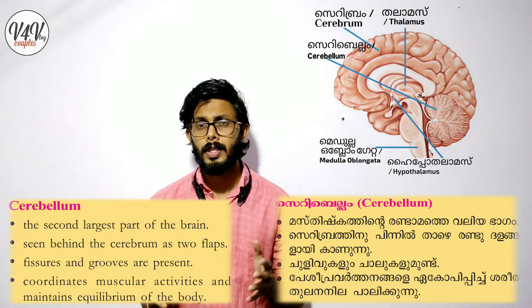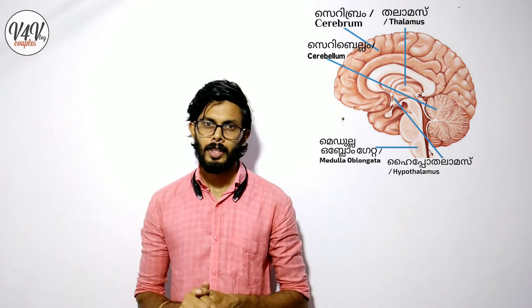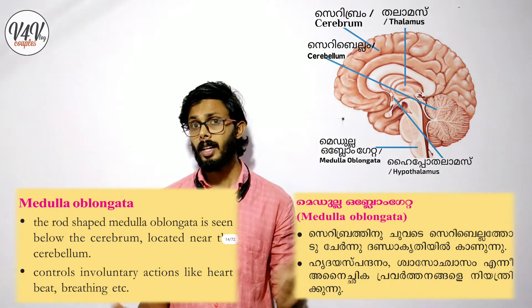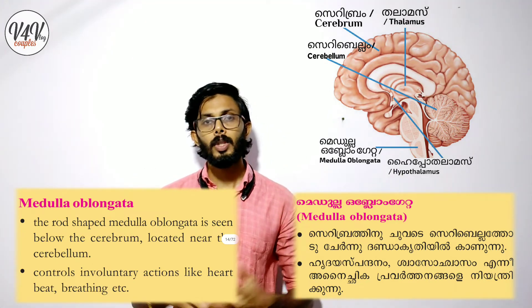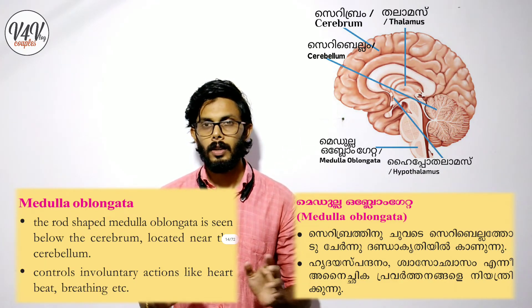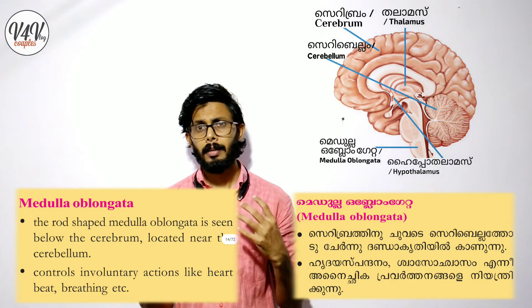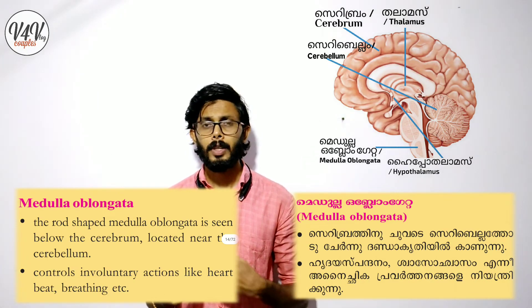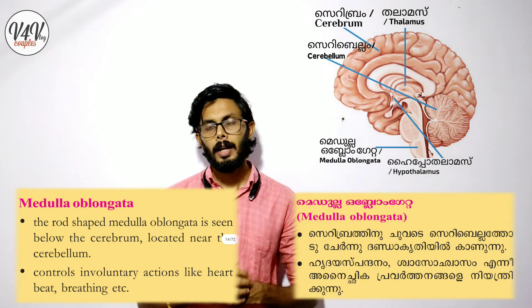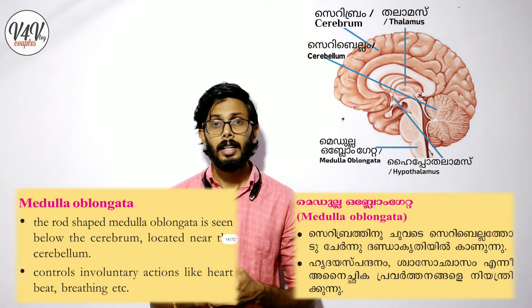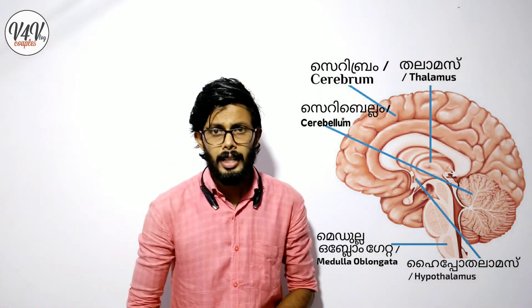This is the medulla oblongata. It has a rod-like shape. It is below the cerebrum and near the cerebellum. This is the medulla oblongata and its functions.